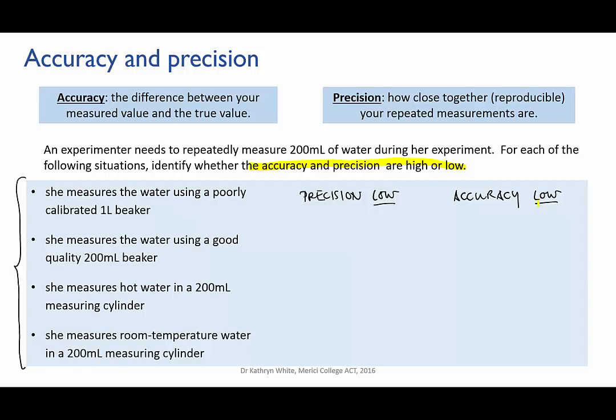In the second situation, things have improved a bit. She's using at least a good quality piece of glassware, so we hope that it's well calibrated, and it's closer to the volume that she wants to measure. This makes it more likely that the 200 mil mark actually represents 200 mils.